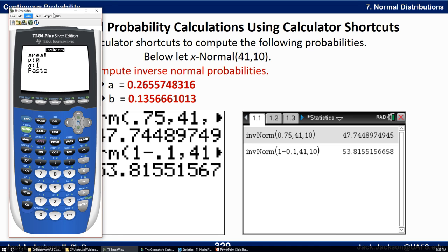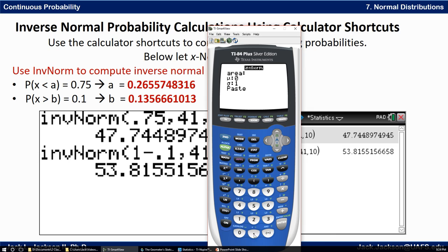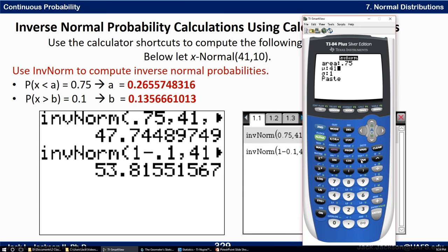When it says area that means area to the left or probability to the left, which is 0.75, and mean was I think it was still 41 and standard deviation is still 10 and click paste. Or if it doesn't come up with that little wizard you just have to know the order: it's invnorm, left probability, mean, standard deviation, hit enter and we get that. I just forgot to type, I've got the right answers I just forgot to type them in. Let me go ahead and fix that now.